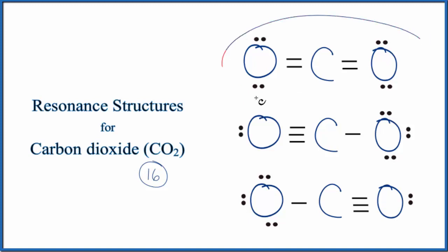Each one of these structures has 16 valence electrons, so that's valid. Each atom has eight electrons around it, so it has an octet. These are all valid Lewis structures, but there's one that's more likely or more favorable.